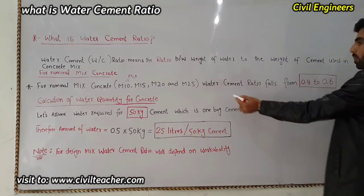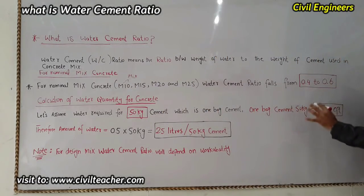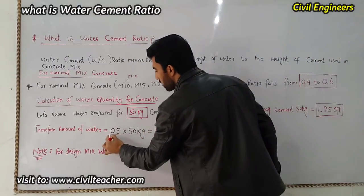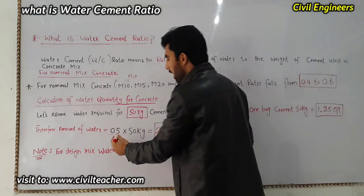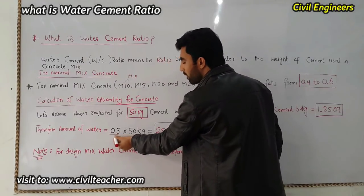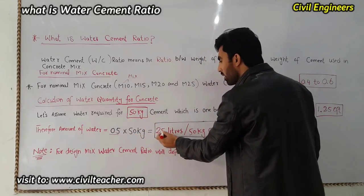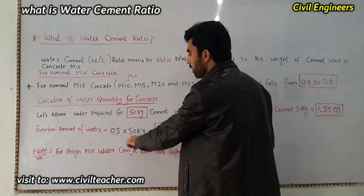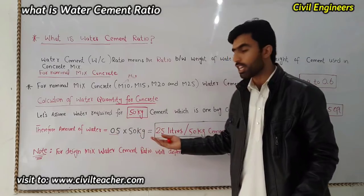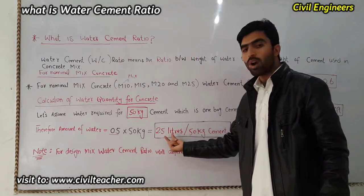The water-cement ratio for nominal mix concrete falls from 0.4 to 0.6, so I have taken 0.5 as the middle value. Amount of water = 0.5 × 50 kg = 25 liters of water for 50 kg of cement. This is the formula. If you have 100 kg, 300 kg, or 1000 kg of cement, use this same formula. You can also take 0.6 or 0.4 depending on your requirement, and the result will be in liters.